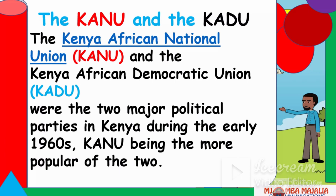KANU stood for Kenya African National Union, and KADU was Kenya African Democratic Union. KANU was mainly led by Kenyatta, while KADU was led by Ronald Ngala from the Coast. These were the two major political parties in Kenya during the early 1960s, KANU being the more popular. They had different political views, and this is partly why the constitution was delayed — every time they went to Lancaster House, they couldn't agree, with pulling interests and jostling for positions.